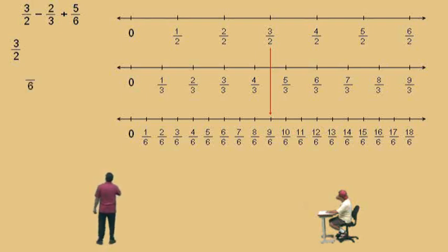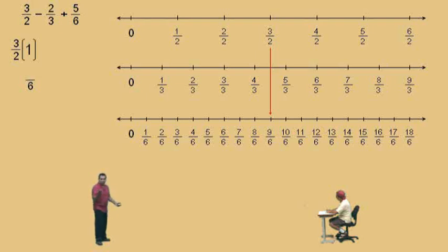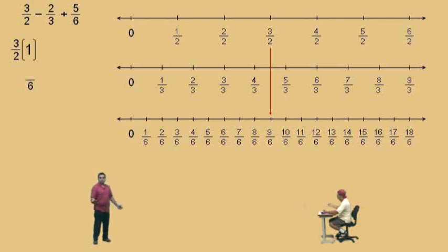We know 3 halves is going to be written with a denominator of 6. What we're really going to do is take 3 halves and multiply by 1. Because what's 3 halves times 1? It's 3 halves. That's right. Remember, if you multiply a number by 1, you don't change it. But we're going to use a specific form of 1.